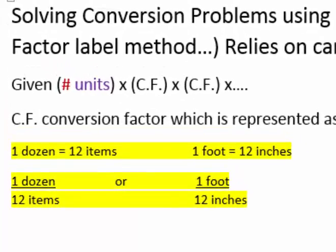For example, one dozen equals 12 items, one foot equals 12 inches. We can represent these physical equivalents as fractions: one dozen over 12 items, one foot over 12 inches.